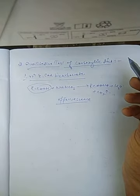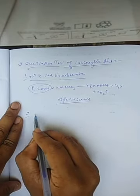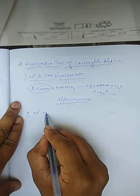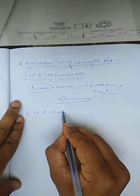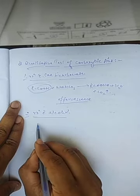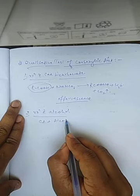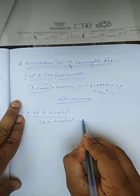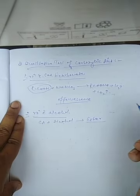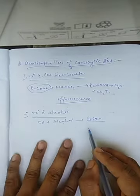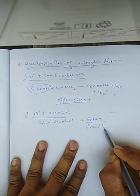Further, we can go with the reaction with alcohol. Whenever any carboxylic acid reacts with alcohol, it always produces an ester as the final product, and this ester has a fruit-like smell.